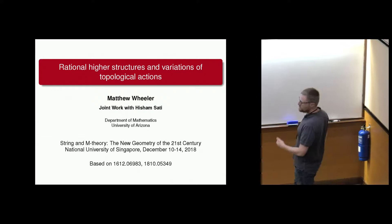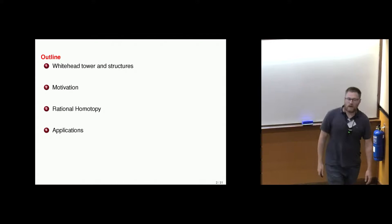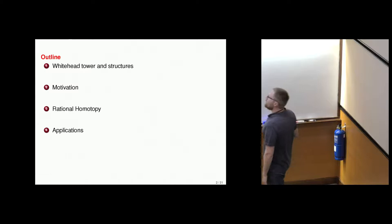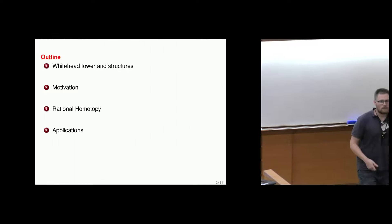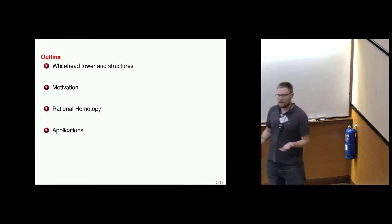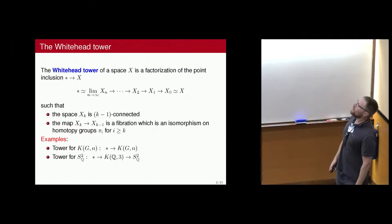What I'm going to talk to you today about is these higher tangential structures related to orientations and spin bundles. I'm going to start out with what's called the Whitehead tower, set the scene, and tell you which structures I care about. Then I'll give a little bit of motivation and tell you why we care about the certain structures we're looking at. Then I'm going to go into rational homotopy — that's really what I was doing to attack this problem. After that, I'll talk about the applications.